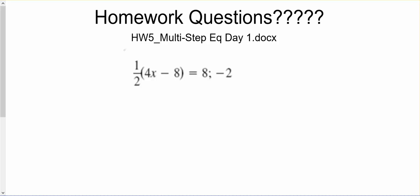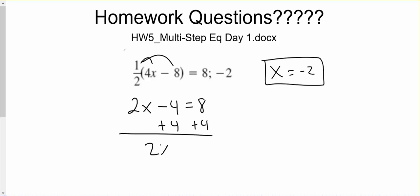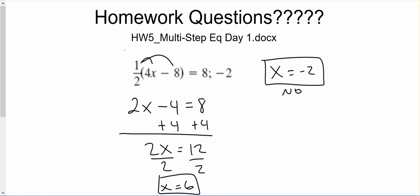Today we're going over a homework question. When you see a semicolon, it's just asking us: is x equal to negative 2 the solution? At the end we'll say yes or no. One half times 4x makes 2x, one half times negative 8 makes negative 4, equals 8. We're going to add 4. 2x equals 12, divide by 2, and x equals 6. So it would be no — it doesn't equal negative 2, it equals 6.